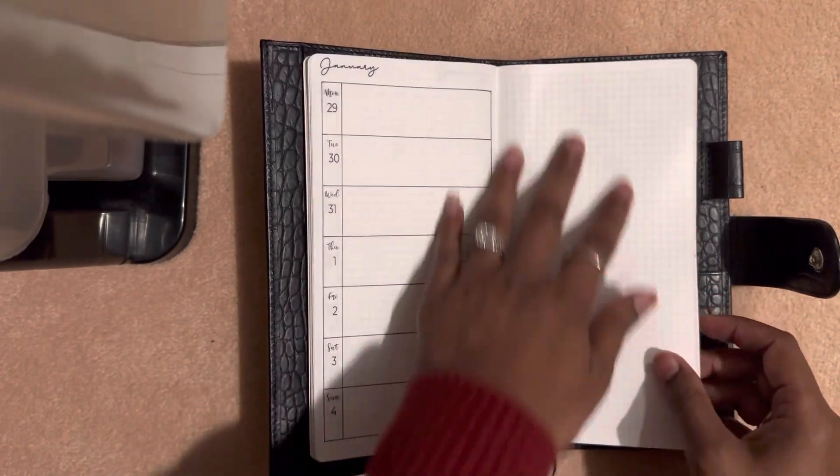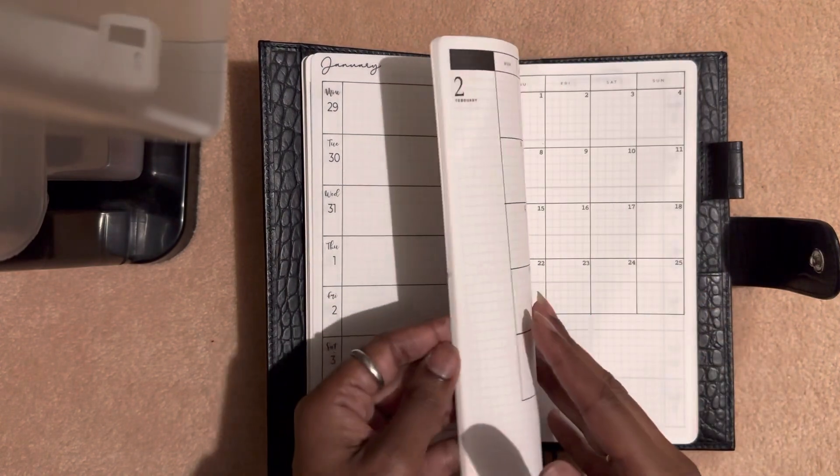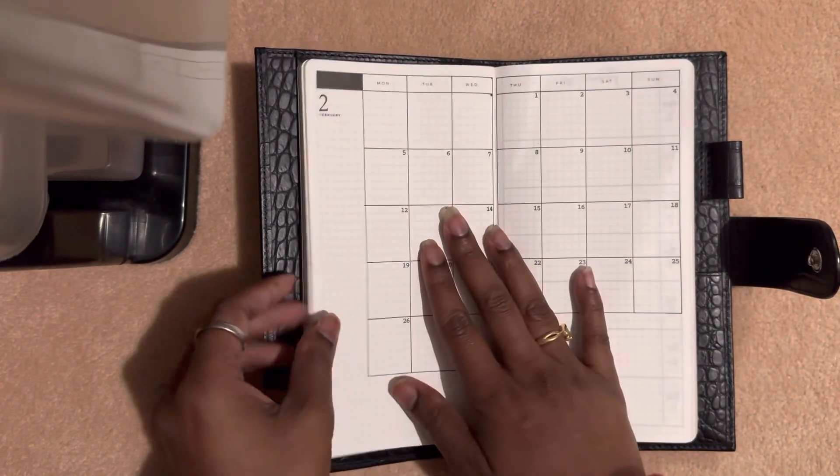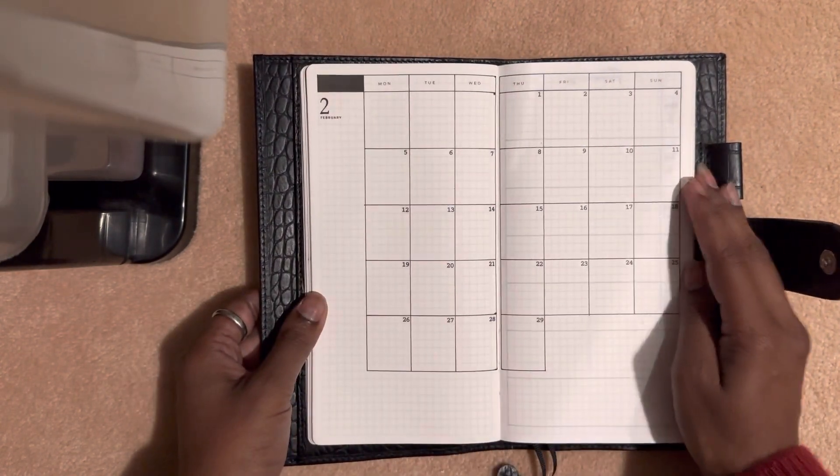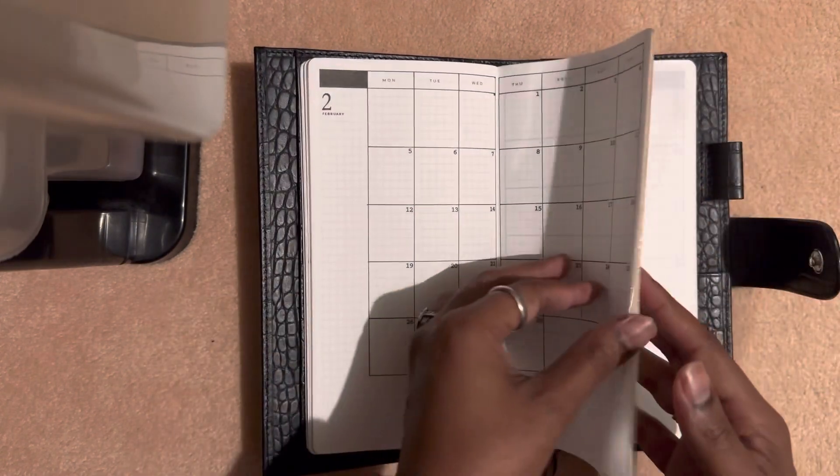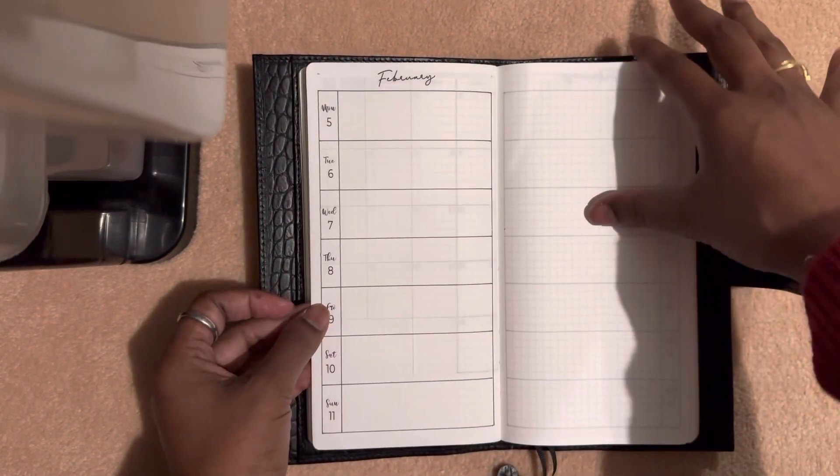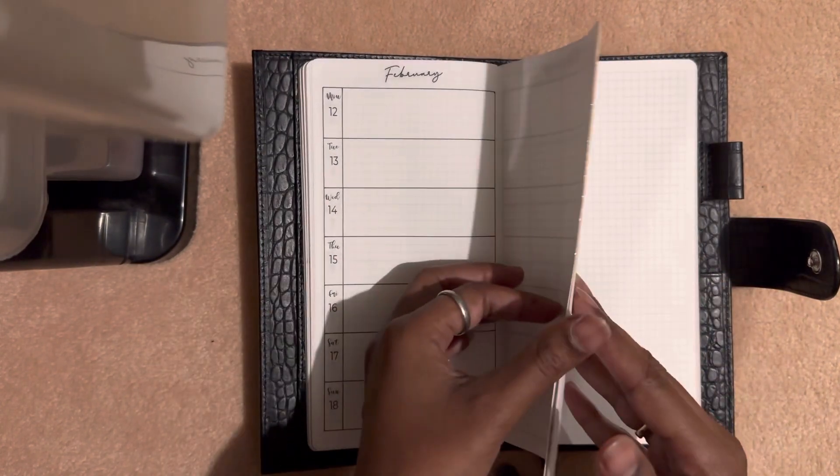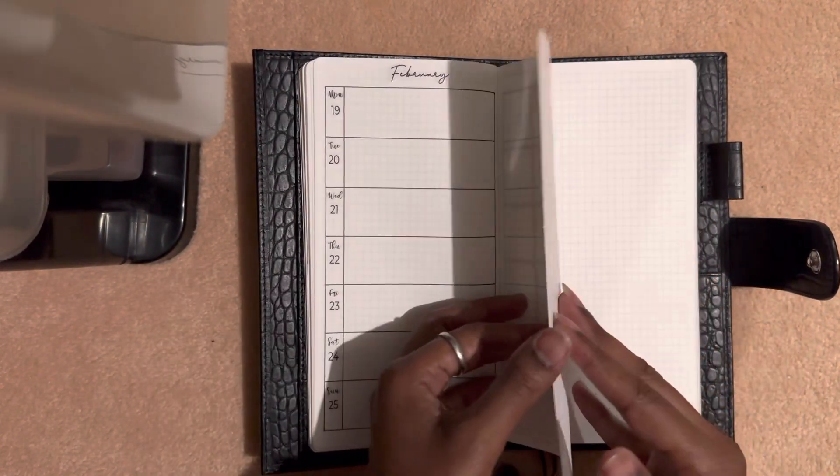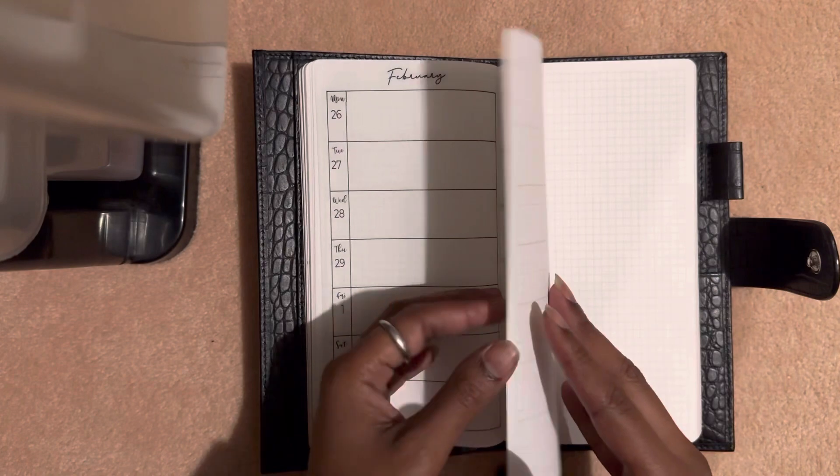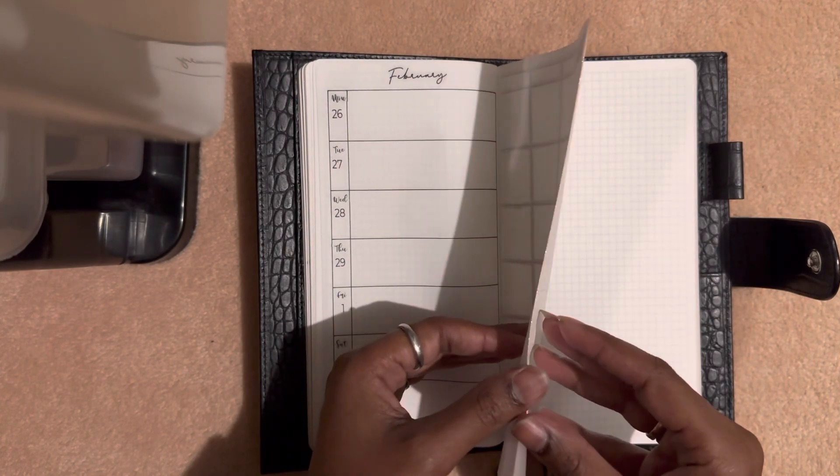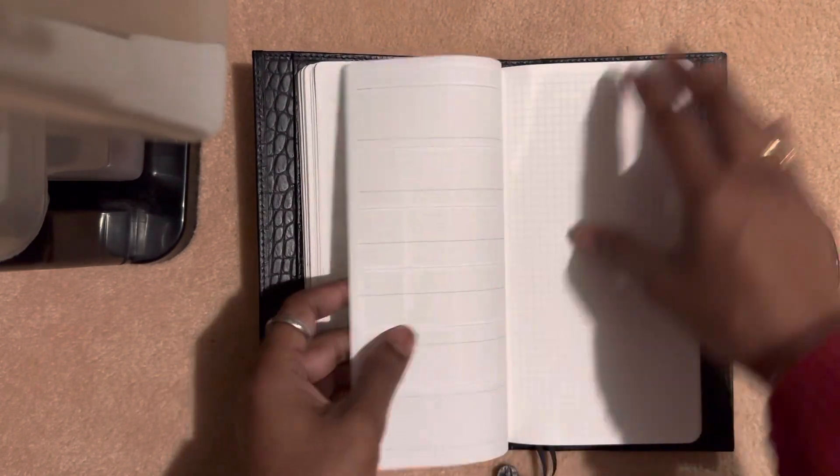So that's the January, and then I left I think about 32 pages here for daily spreads and maybe like an index for the notes that I take during the month in there. And then you move on to the next, which is February. And you can see February.